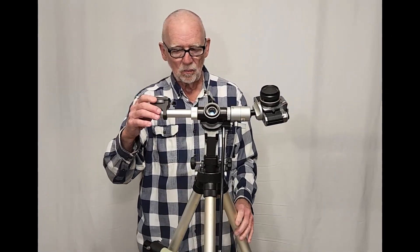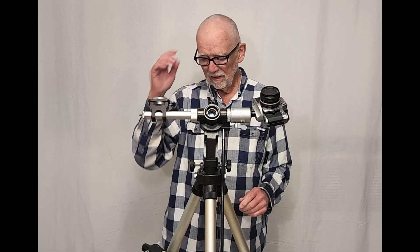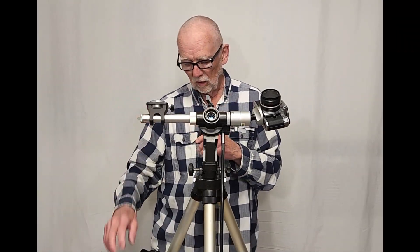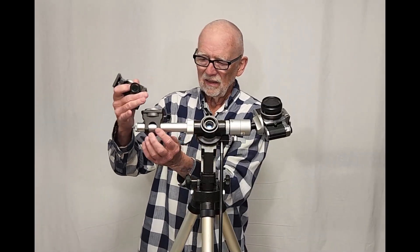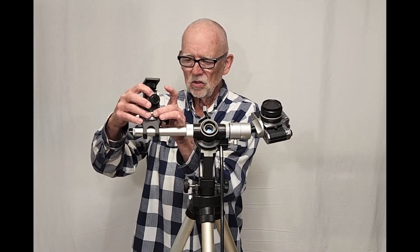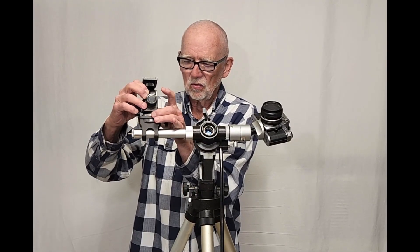Now over here is where you put your guide scope and this particular model didn't even come with a guide scope I don't believe. So you would have to provide your own guide scope of some sort and what they showed with the more expensive models was a sort of a little alt-az kind of a deal that you put on here. This is just for a little fine alt-az control.